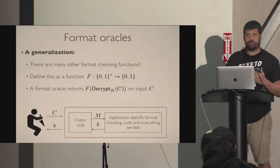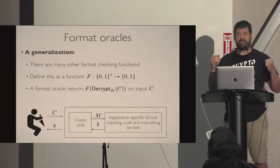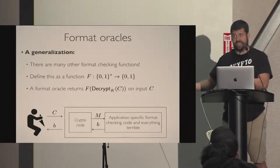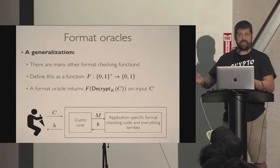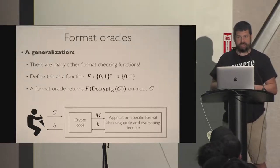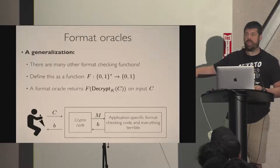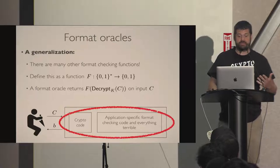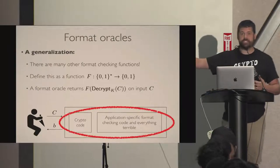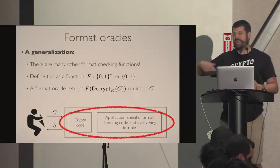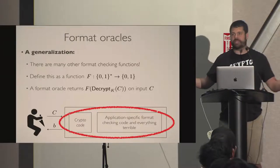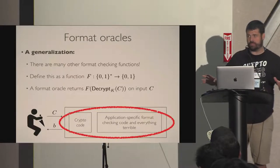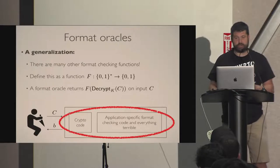Format oracle attacks can be very deep. We typically think about crypto in terms of cryptographic libraries and code, as is even the case for padding oracle attacks. But format oracle attacks can go way beyond the crypto code. If you're vulnerable to a format oracle attack, the vulnerable component could be your application-specific parsing logic, your decompressor, or even something like decrypting a firmware image and trying to run code from it. This goes way beyond the crypto, if you're not authenticating your encryption.